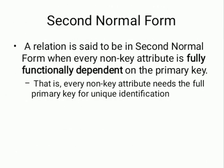Second Normal Form: a relation is said to be in second normal form when every non-key attribute is fully functionally dependent on the primary key. That is, every non-key attribute needs the full primary key for unique identification.